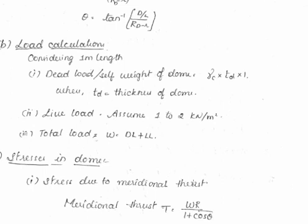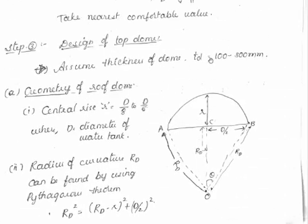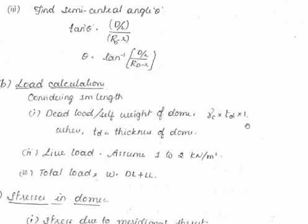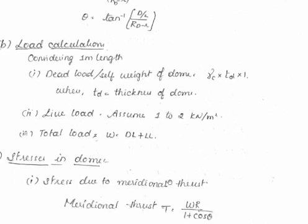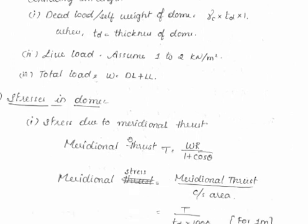For load calculation, consider 1 meter length of the dome. Dead load or self-weight is γc × td × 1, where td is the thickness of the dome and γc is the unit weight of concrete. Live load can be assumed as 1 or 2 kN/m². Total load is dead load plus live load.